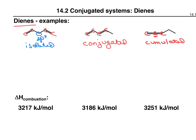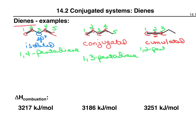Similar to what we did with alkenes, to name a diene or triene we just have to specify the first carbon of each alkene. For our first compound, numbering left to right gives us 1, 2, 3, 4, 5 — this is 1,4-pentadiene: penta because it's five carbons, diene because there are two alkenes, starting at carbon 1 and carbon 4. The conjugated example is 1,3-pentadiene, and the cumulated example is 1,2-pentadiene.